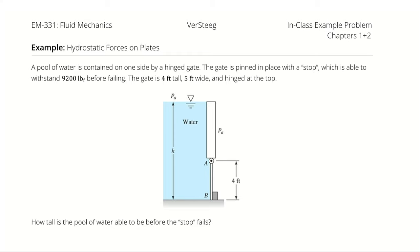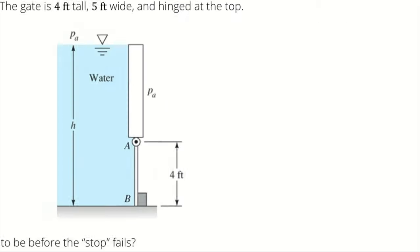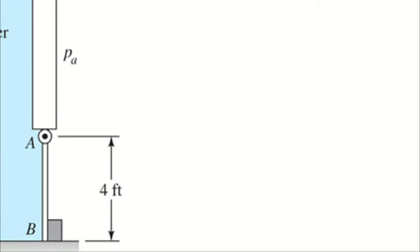A pool of water is contained on one side by a hinged gate. The gate is pinned in place with a stop, which is able to withstand 9,200 pounds of force before failing. The gate is 4 feet tall, 5 feet wide, and hinged at the top. How tall is the pool of water able to be before the stop fails?